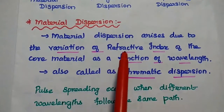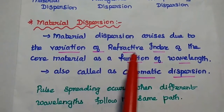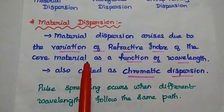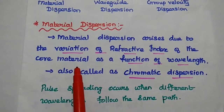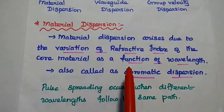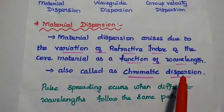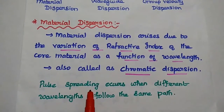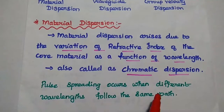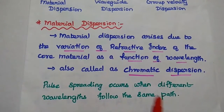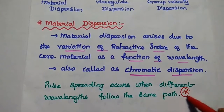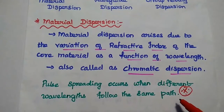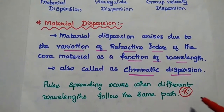Material dispersion occurs due to the variation of refractive index of the core material. Due to the refractive index variation in the core material, there may be a pulse spreading effect as a function of wavelength. It is also called chromatic dispersion. The pulse spreading occurs when the different wavelengths follow the same path — that is the concept of material dispersion.